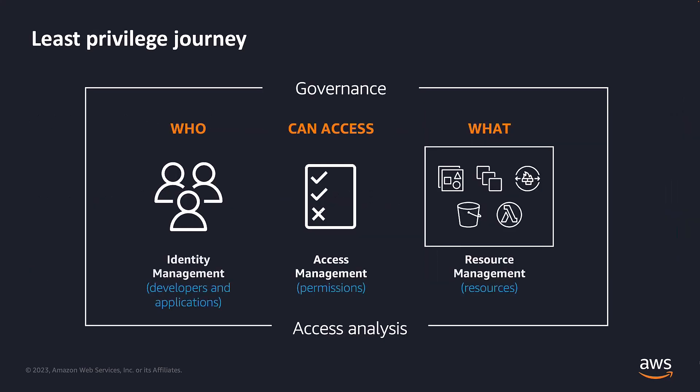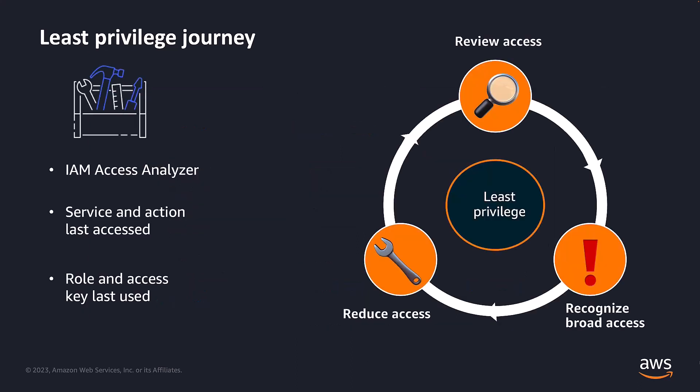One of the important steps in your journey to a least privilege model is to gain visibility and insights on what access a user or IAM entity has and whether it's just enough or overprivileged. Once you gain visibility to the level of access, then you can refine it by removing any unused access.